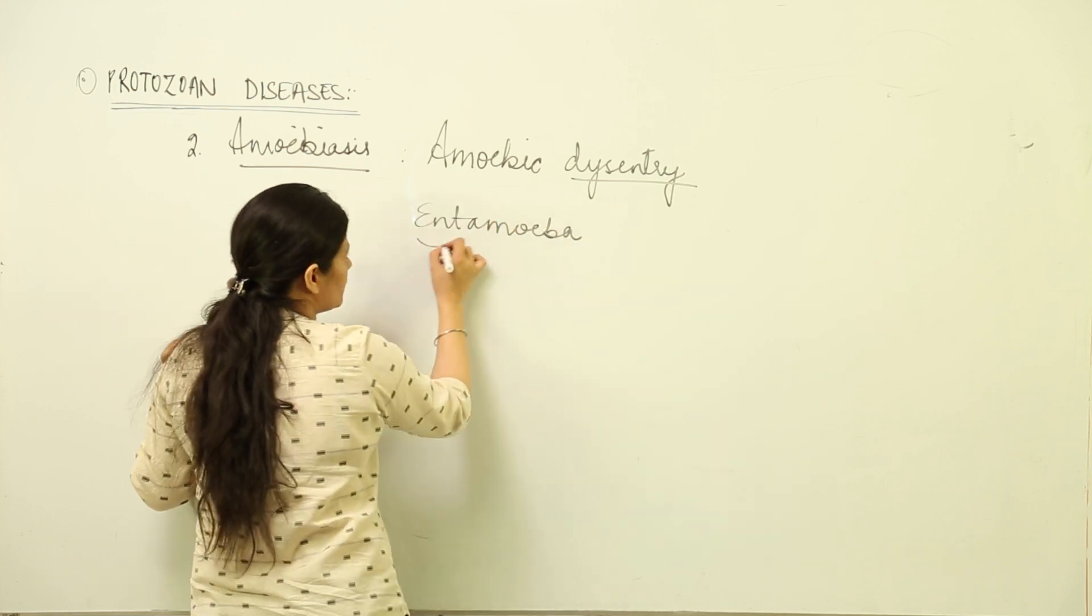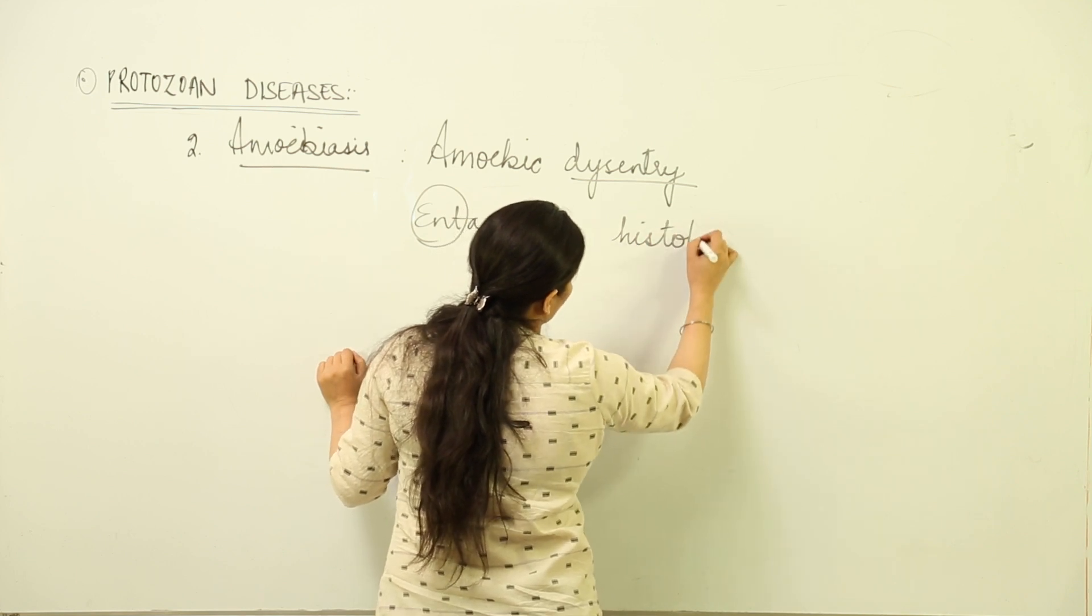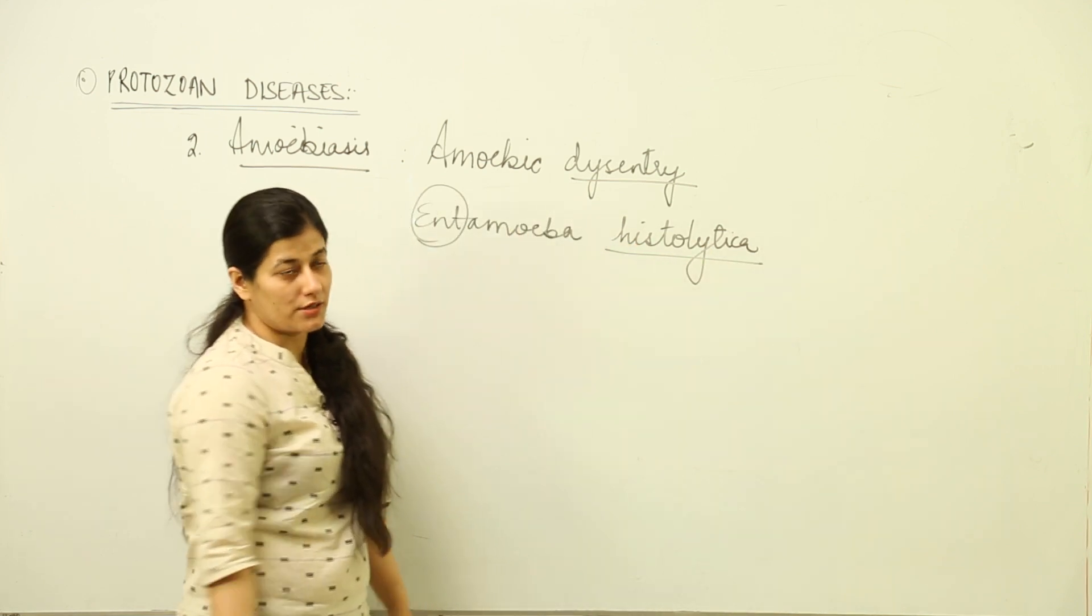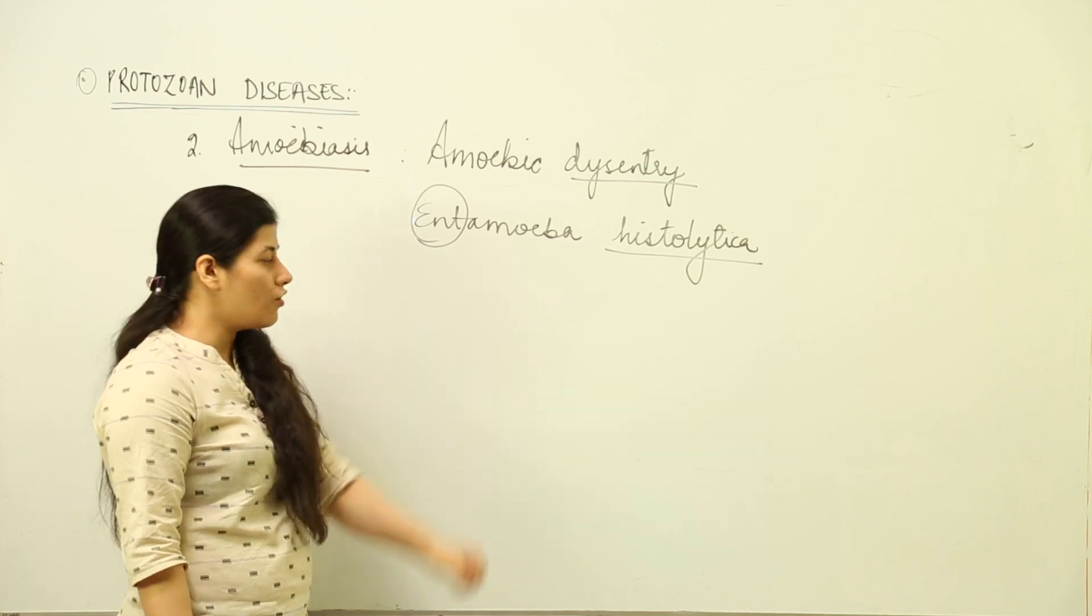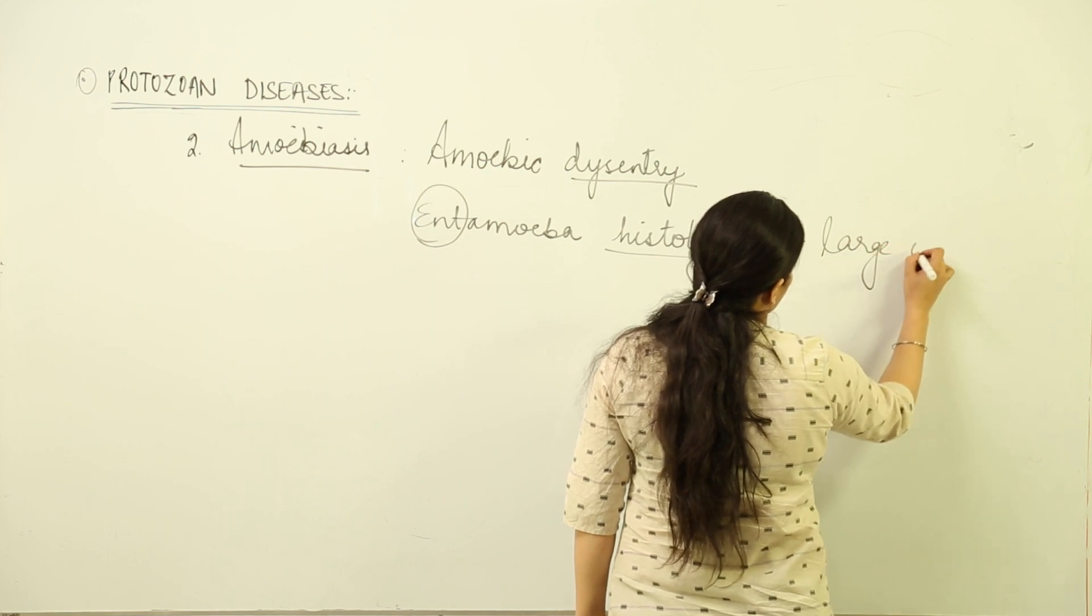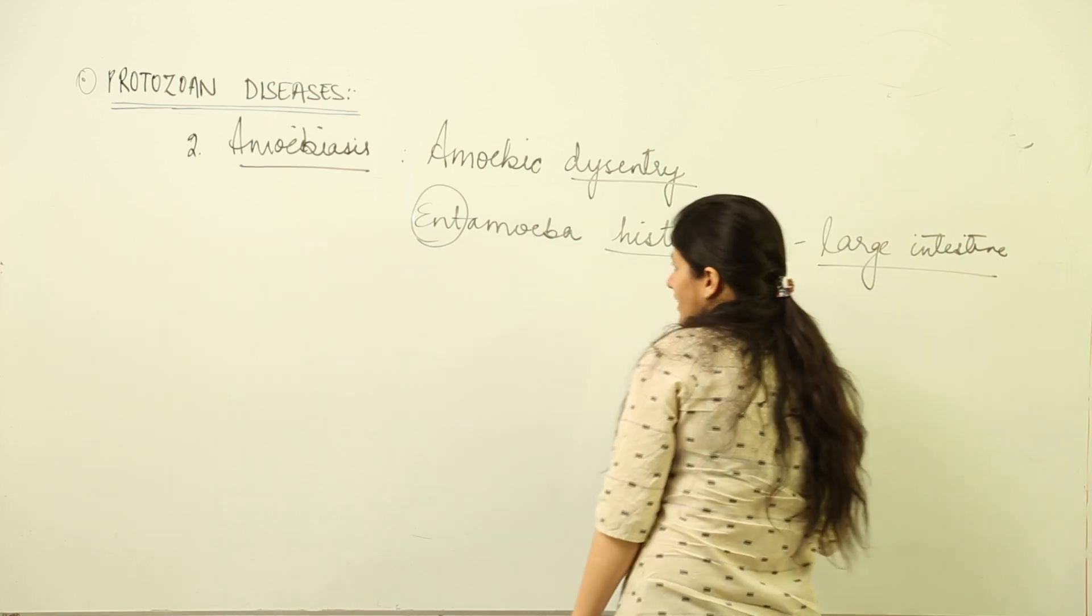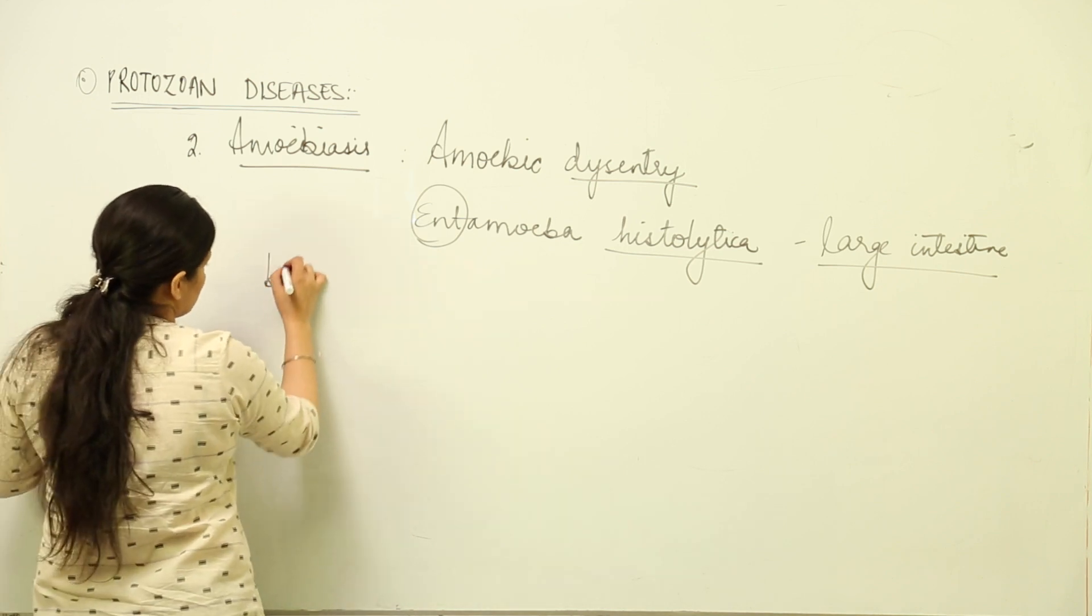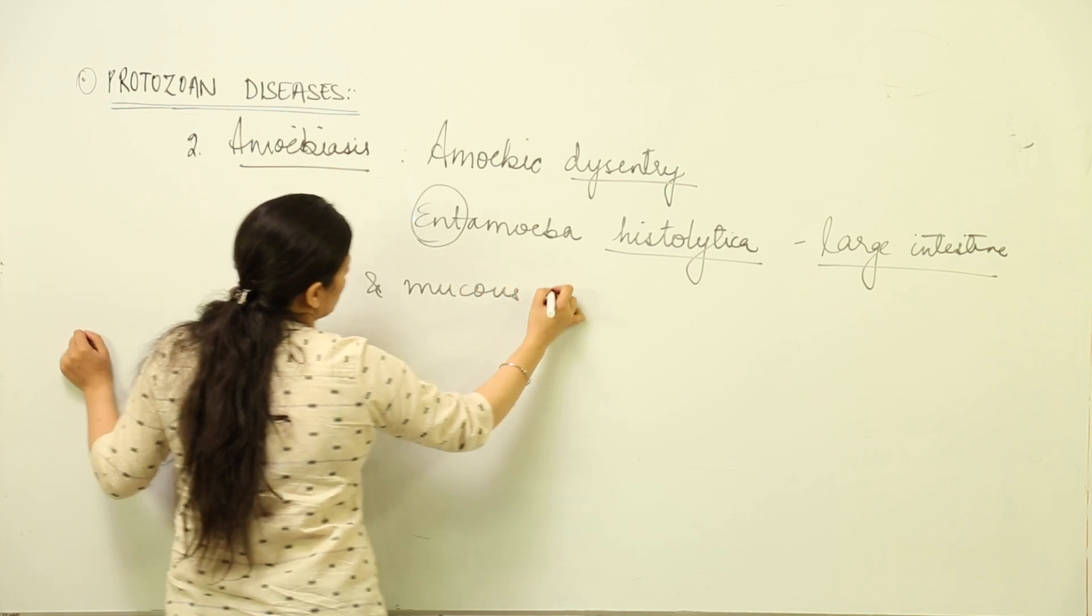Ent word is used for gut, histo for tissue, litica for breaking down. It's that kind of amoeba responsible for eating up the tissue of the large intestine. It infects the large intestine of human beings. There would be cramps in the stomach, large intestine. The symptom is blood and mucus-rich stool.